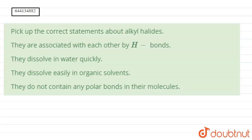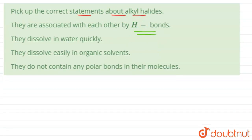We have been asked to find the correct statement — or pick the correct statements — about alkyl halides. So the first statement is: they are associated with each other by hydrogen bond. Now, hydrogen bond can only be formed if hydrogen is between two electronegative elements.